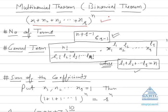What is our formula? The formula is n plus r minus 1, C r minus 1. So the number of terms in this expansion is n plus r minus 1, C r minus 1. This is the formula for that.